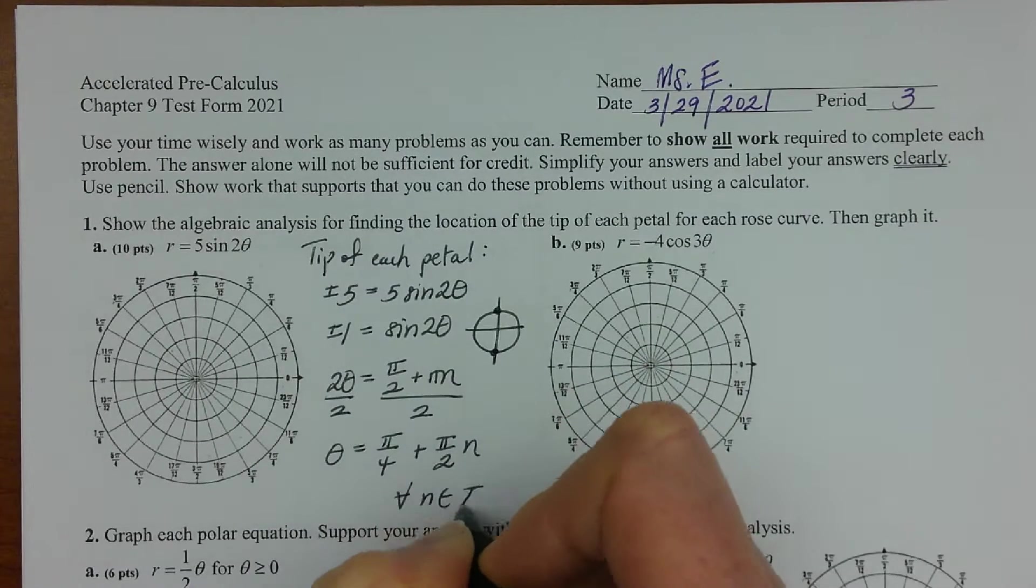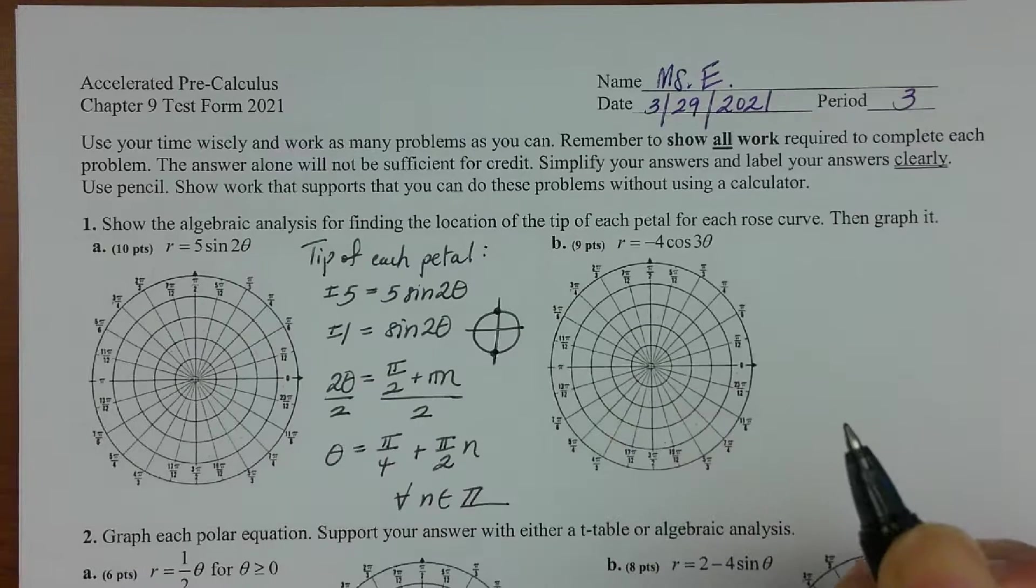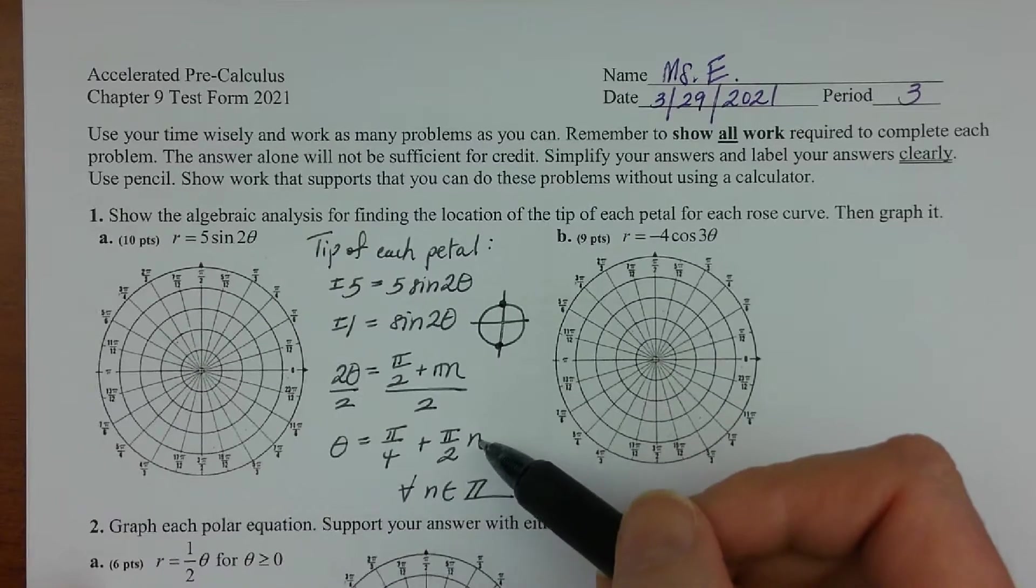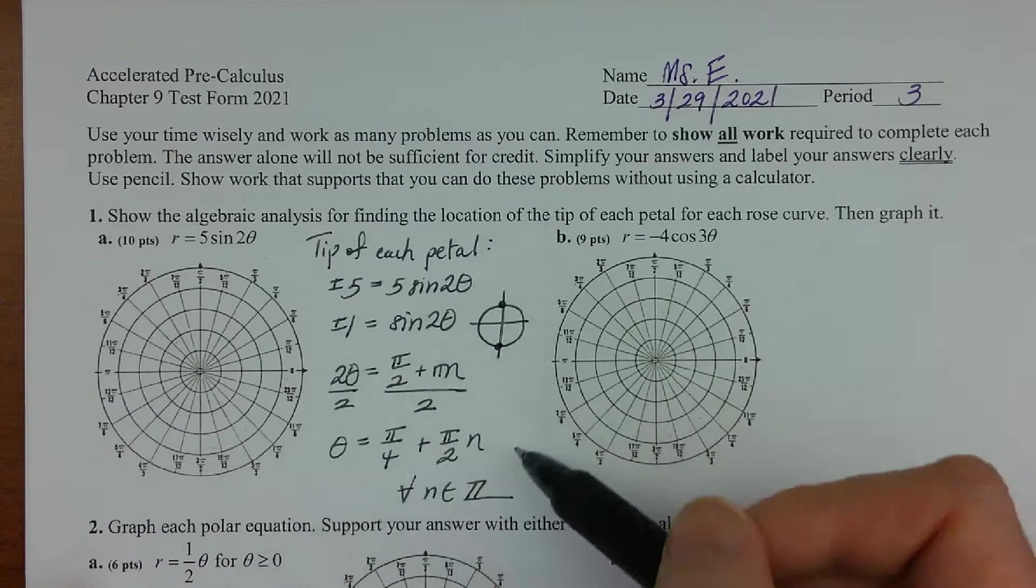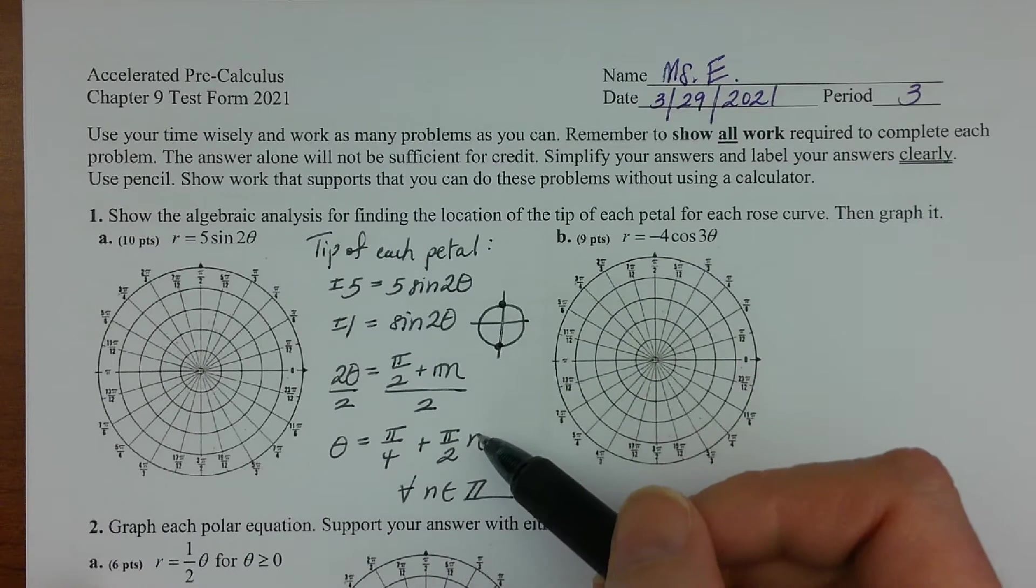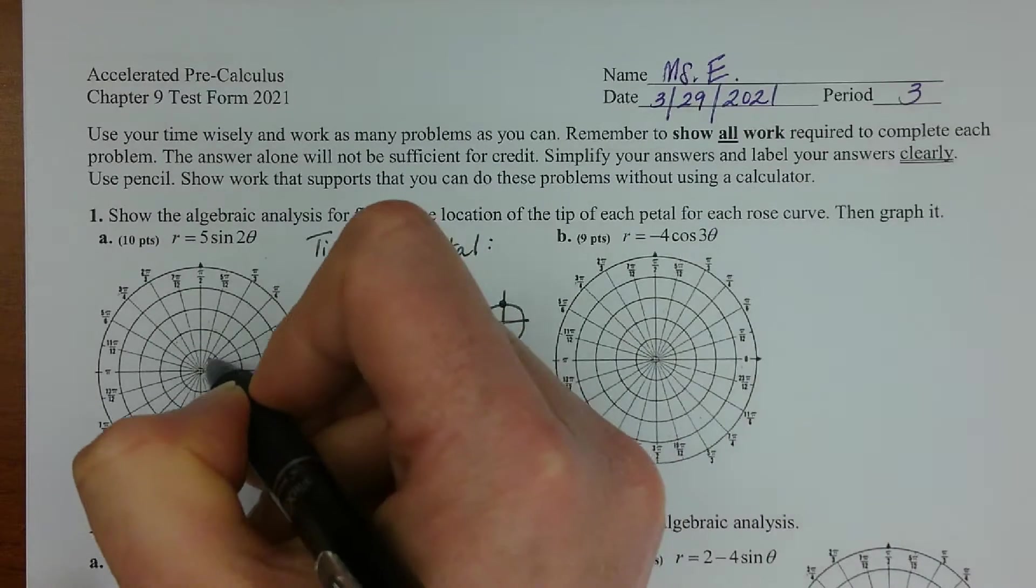And we get theta is equal to pi over four plus pi over two times n for all n from the set of the integers. Okay, so what does this tell us? You could just start plugging in n values starting at zero and then just generate your angles where you'd have tips of petals.